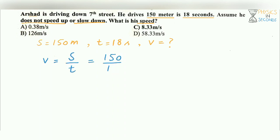S is 150, time is 18. We simplify: 3 into 6 is 18, 3 into 5 is 15, so 150 over 18 equals 50 over 6. Then 6 into 8 is 48, remainder 2, giving 0.3 — which means 8.3 meters per second.